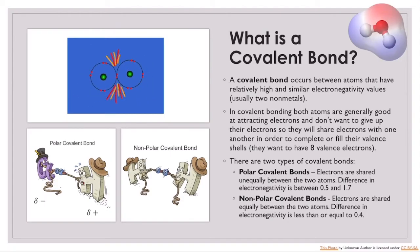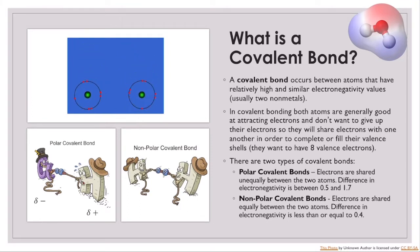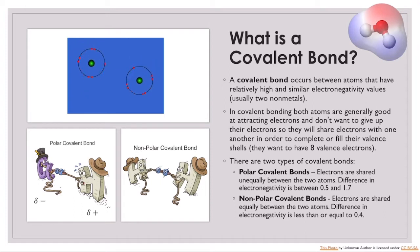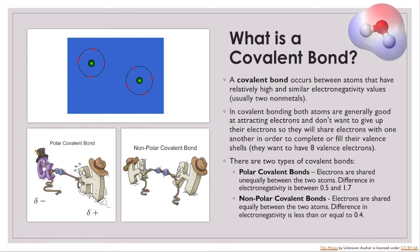We're going to start off by talking about what a covalent bond is. A covalent bond occurs between atoms that have relatively high and similar electronegativity values, so it usually occurs between two non-metal atoms. In covalent bonding, both atoms are generally good at attracting electrons and don't want to give up their electrons, so they end up sharing these electrons in order to fill their valence shells. Atoms of main group elements all want to have eight valence electrons in their outer shell.